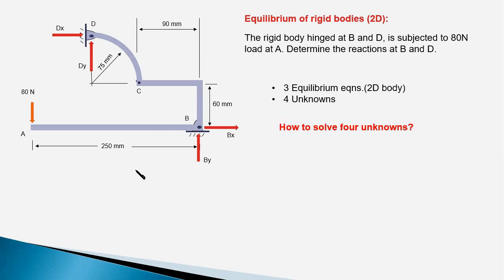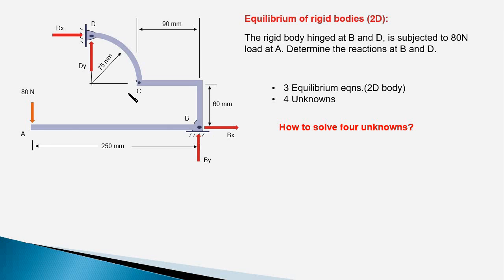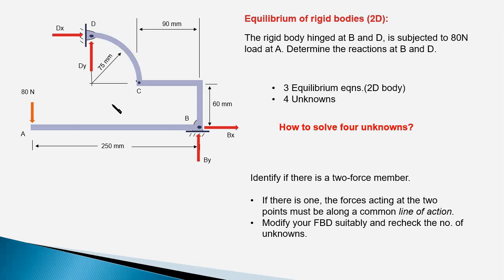So how do we proceed and solve these four unknowns? There are two ways to proceed. One is to dismember the entire rigid body and consider the two members separately. Since the entire body is in equilibrium, each member is also in equilibrium, giving us six equations total — enough to solve four unknowns. But this procedure is lengthy. An alternate and simpler way is to look for a two-force member in this rigid body.